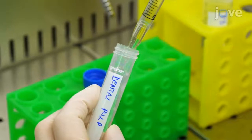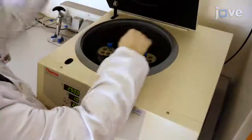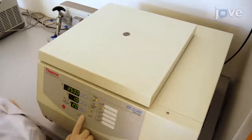Then wash with PBS three times and centrifuge at 2500 times G at room temperature for 10 minutes.